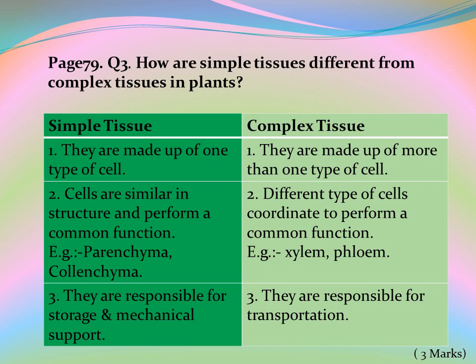Page 79, Question 3: How are simple tissues different from complex tissues in plants? Answer: Simple tissues are made up of one type of cell; complex tissues are made up of more than one type of cell. Cells are similar in structure and perform a common function in simple tissues — examples: parenchyma, colenchyma. Different types of cells coordinate to perform a common function in complex tissues — examples: xylem, phloem.